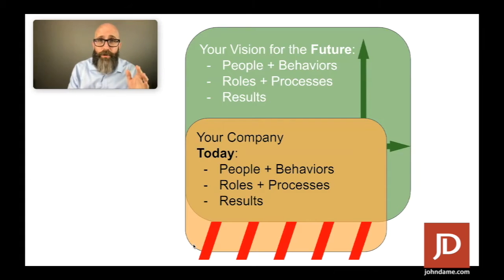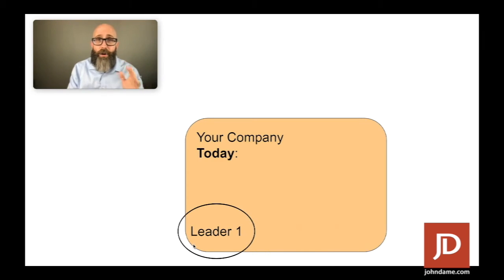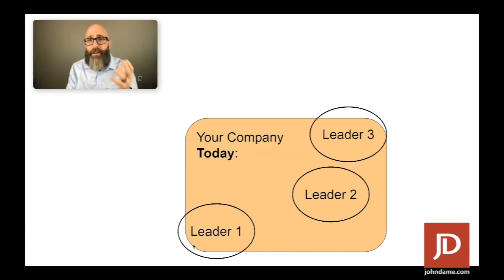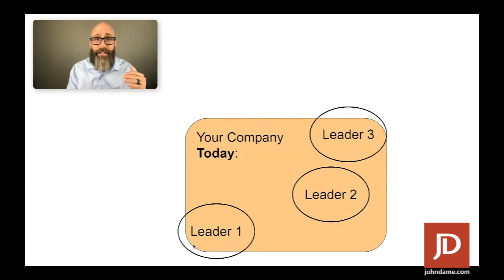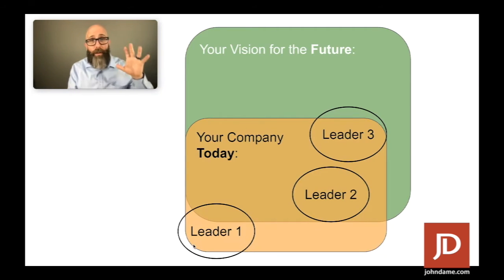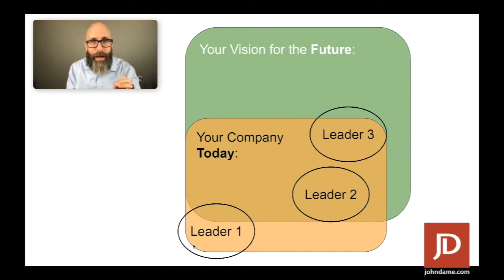With this construct, we can overlay your current leaders — leader one, two, and three. Leader one is new, developing into the role, still not there yet for where you are today. Leader two is in a good spot. Leader three is exciting because we're getting leadership capacities today that we're not able to fully utilize. But when we overlay your vision of the future, we can clearly articulate where the gaps are in things like behaviors, so we can train specifically to them.